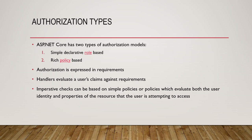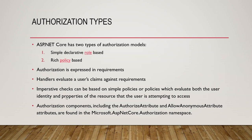Imperative checks can be based on simple policies or policies which evaluate both the user identity and properties of the resource the user is attempting to access. The Microsoft.AspNetCore.Authorization namespace includes Authorize attributes and AllowAnonymous attributes, which we will see in the next lecture.